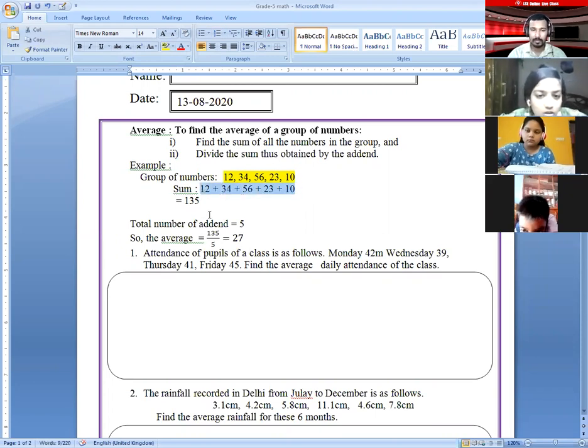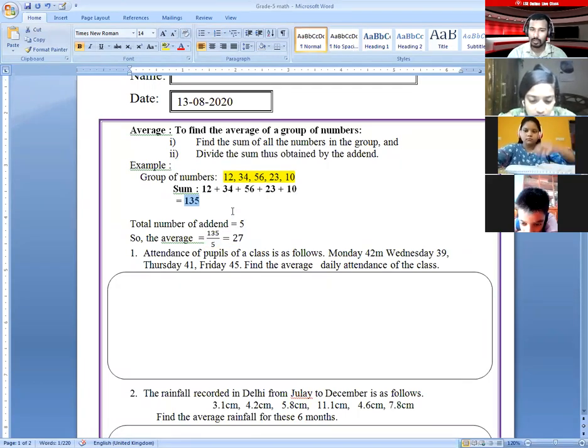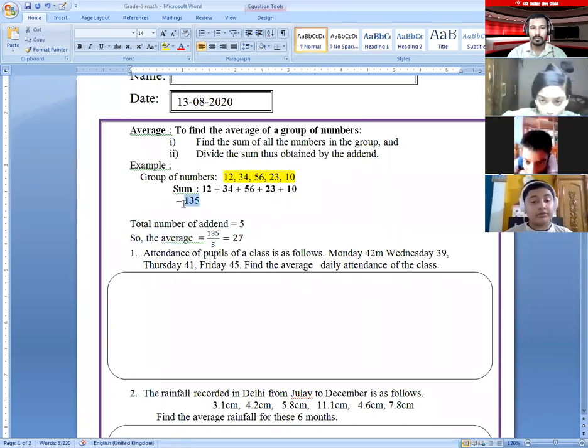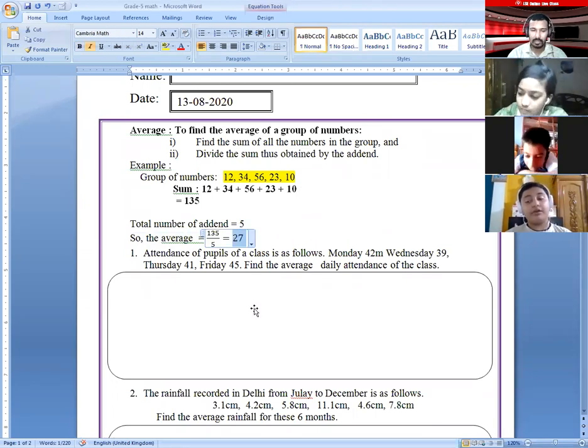At first we will find out the sum total. So 12 plus 34 plus 56 plus 23 plus 10, the result is 135. We have to add all the numbers and find the total. Then count the number - how many numbers are here? One, two, three, four, five. So the average is 135 divided by 5, then the result will be 27. In this way we will have to do the math to find out the average. Understood?